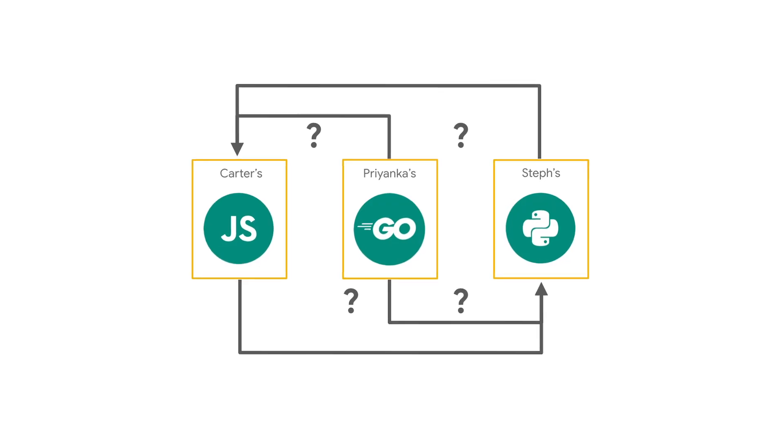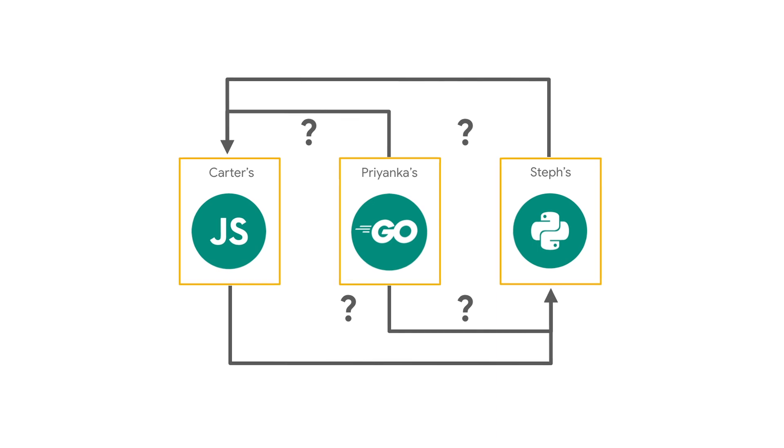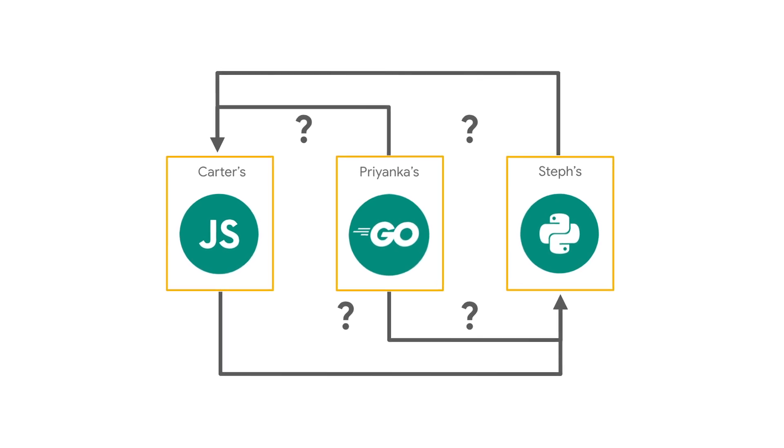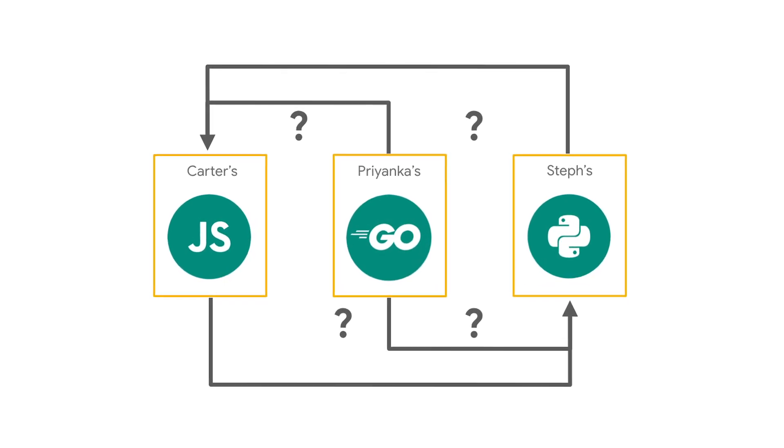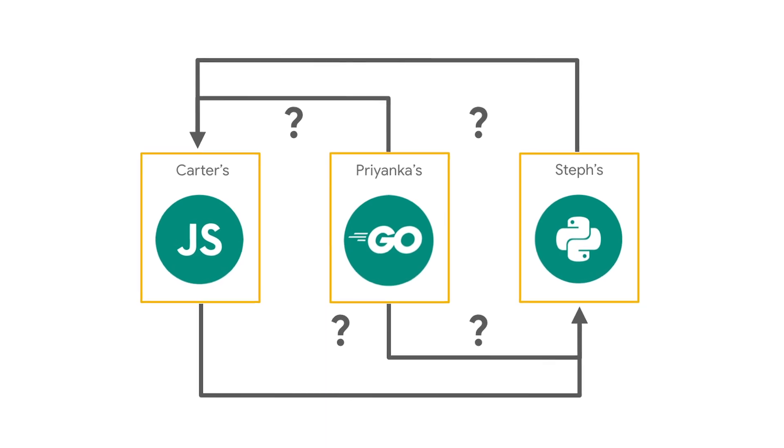But does this mean microservices are perfect? No. With monolithic platforms, every logical component can speak to every other component pretty much by default, because they're all part of the same whole. But with microservices, even though each individual component is simpler and easier to manage, how those services work together to communicate and behave as a system is more complicated and possibly slower due to the added network latency.